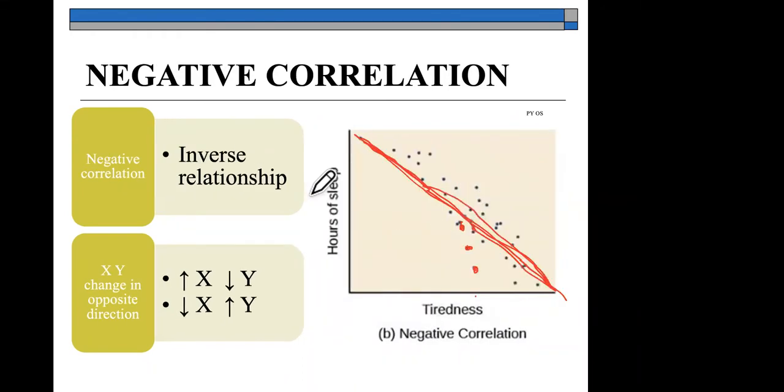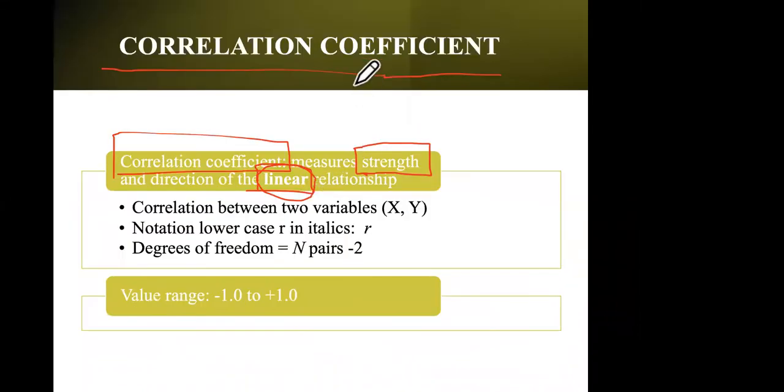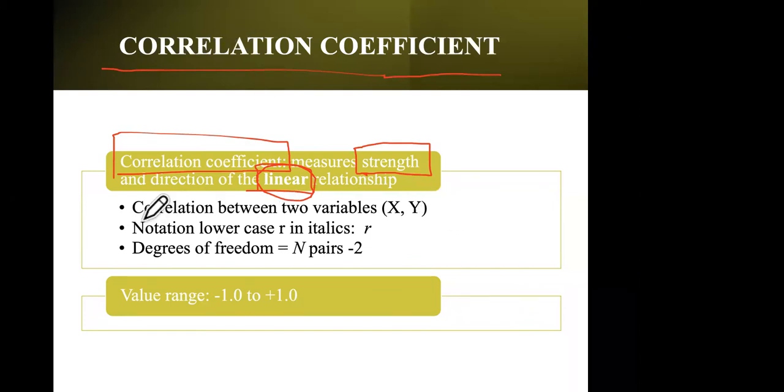There are other types of relationships — exponential and other forms — but for correlation coefficients, we're only referring to relationships where we can see that general linear pattern, whether positive or negative. Also, for this exercise, we're only looking at two variables at a time — for example, being tired and hours of sleep, or weight and height — observing just X and Y.